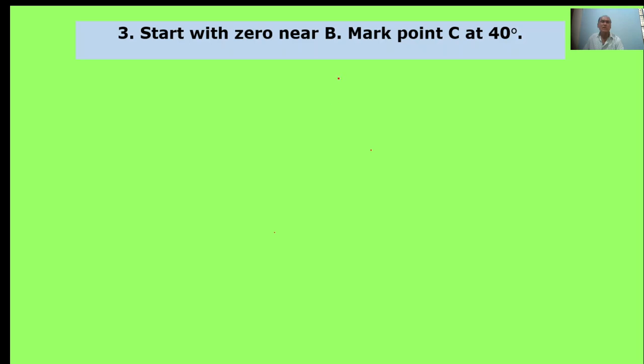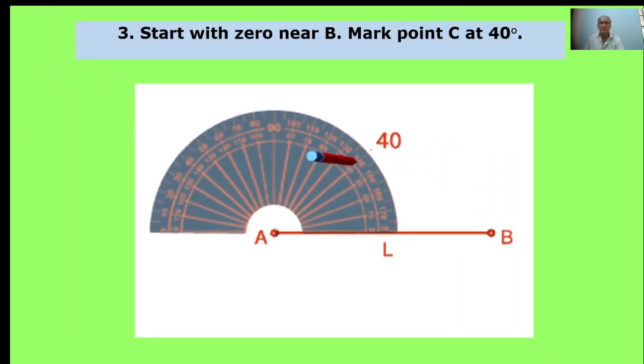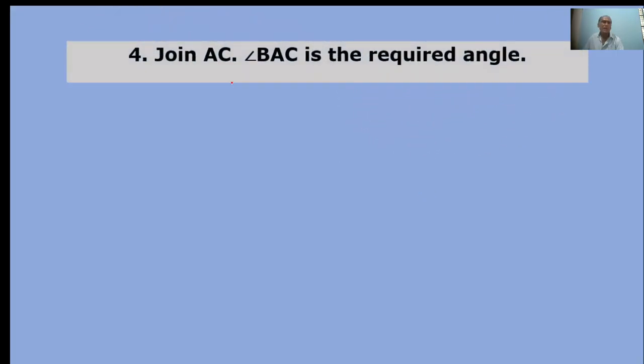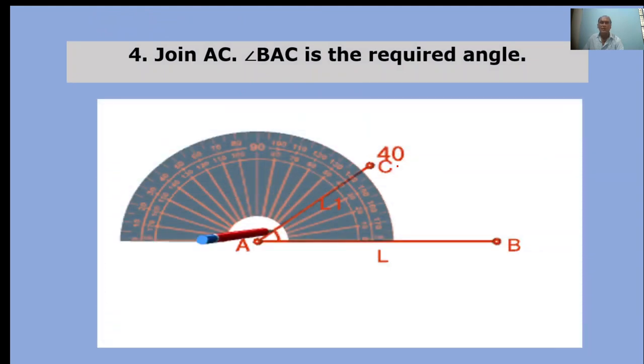Start with zero near B. Mark point C at 40 degrees. Here, zero. Put point A. We take the point to 40 degrees. Join AC. Angle BAC is the required angle. BAC equals 40 degrees.